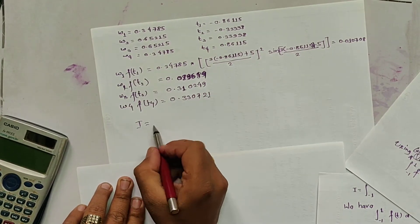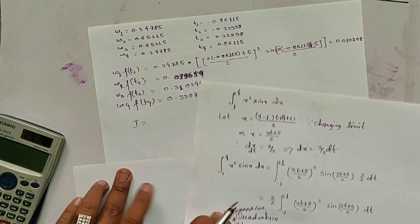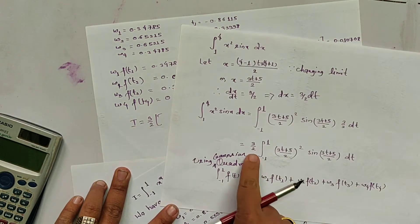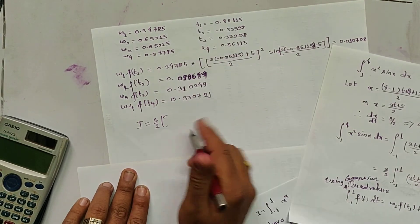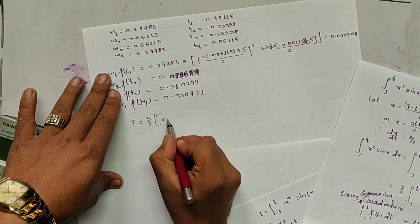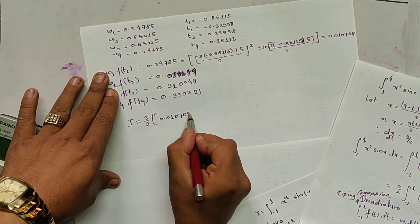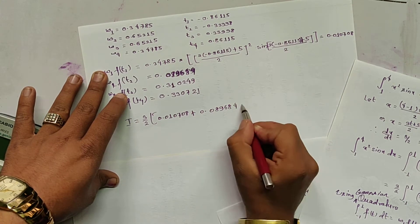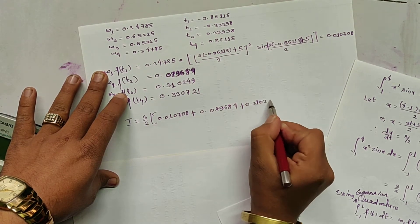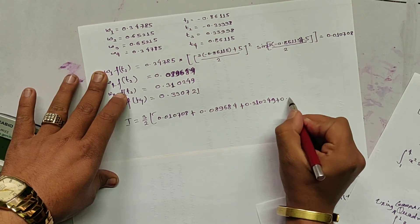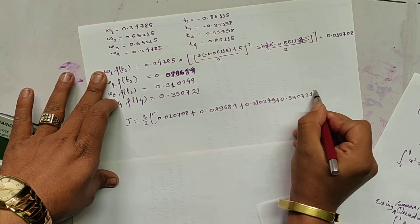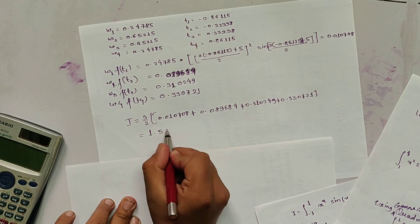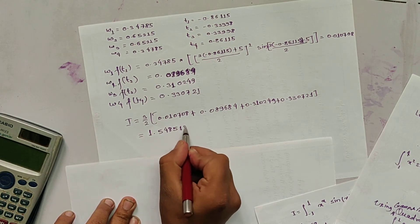Adding all the terms: 0.010708 + 0.089684 + 0.310249 + 0.330721. Since there is a factor of 3/2 outside the integral, I = (3/2) * (sum of terms) = (3/2) * 1.032362 = 1.548518. This is the required value of the integral using the Gaussian 4-point form.